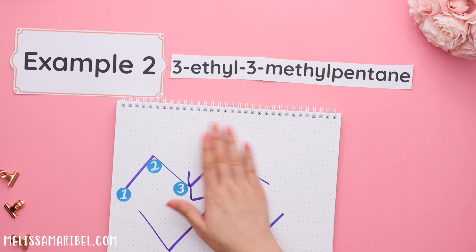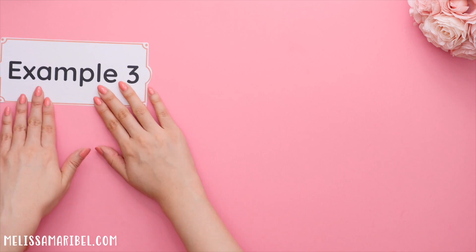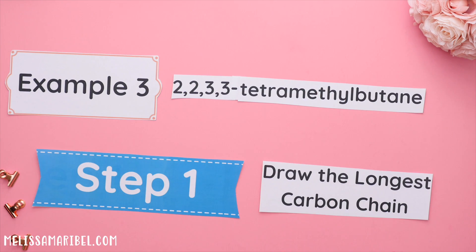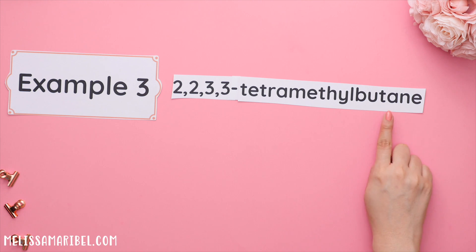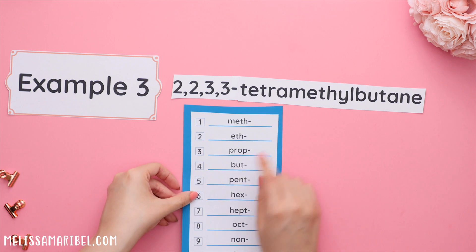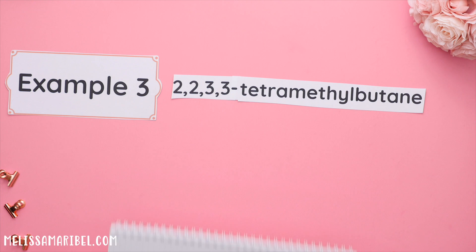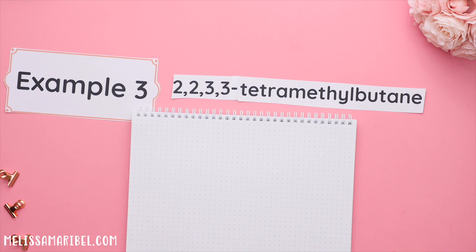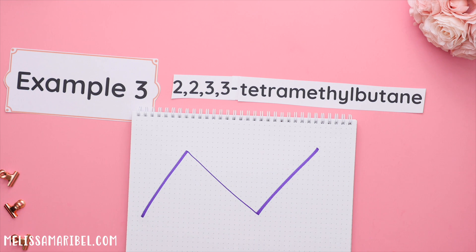Now for our more challenging example — example three. Step one: draw the longest carbon chain. Our longest carbon chain is butane, but meaning four, so we'll draw four carbons. So one, two, three — and we drew one, two, three, four carbons.